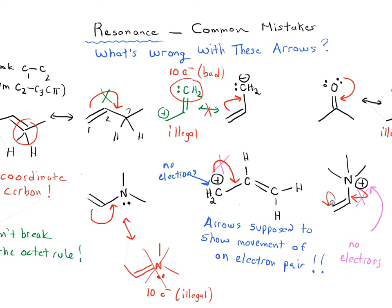There's nothing wrong with one of the arrows here per se, but this arrow from nitrogen is bad because there are no electrons on that nitrogen to move.